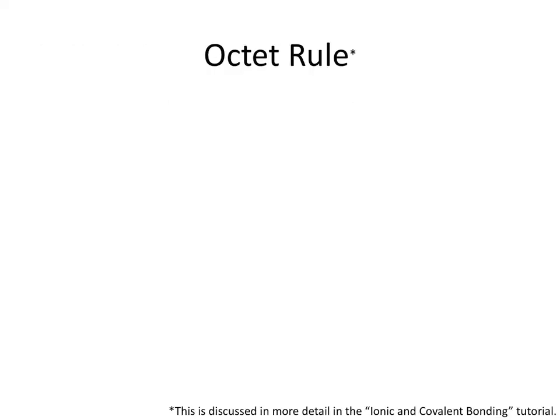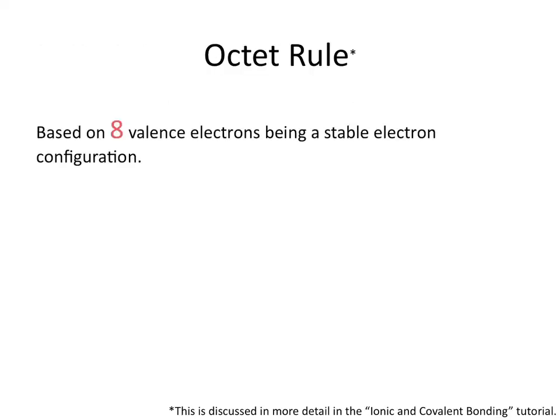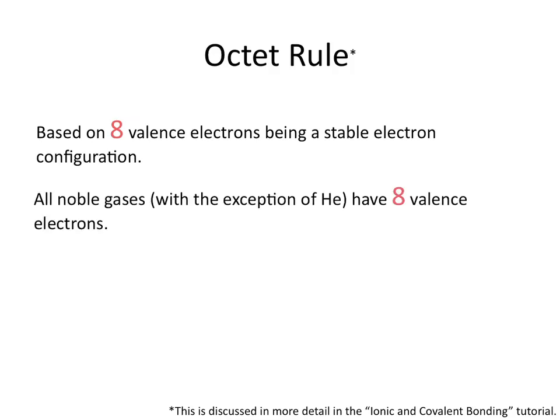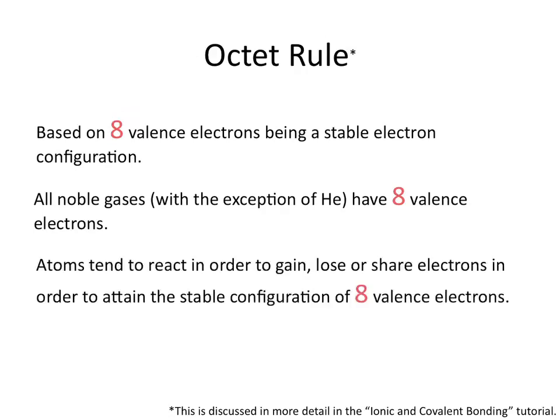What is the octet rule? The octet rule is based on 8 valence electrons being a stable electron configuration. All noble gases, with the exception of helium that has only 2 valence electrons, have 8 valence electrons, and all noble gases are stable. Atoms tend to react in order to gain, lose, or share electrons in order to attain that stable number of 8 valence electrons.